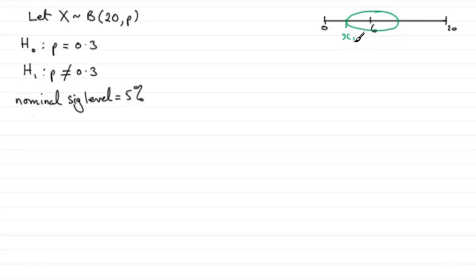We call the lower boundary the lower critical value XL, and the upper boundary the upper critical value XU. We need to find these two values so that the probability of being below XL is as close as we can get to 2.5%, and the probability of getting more than XU is as close as we can get to 2.5%.